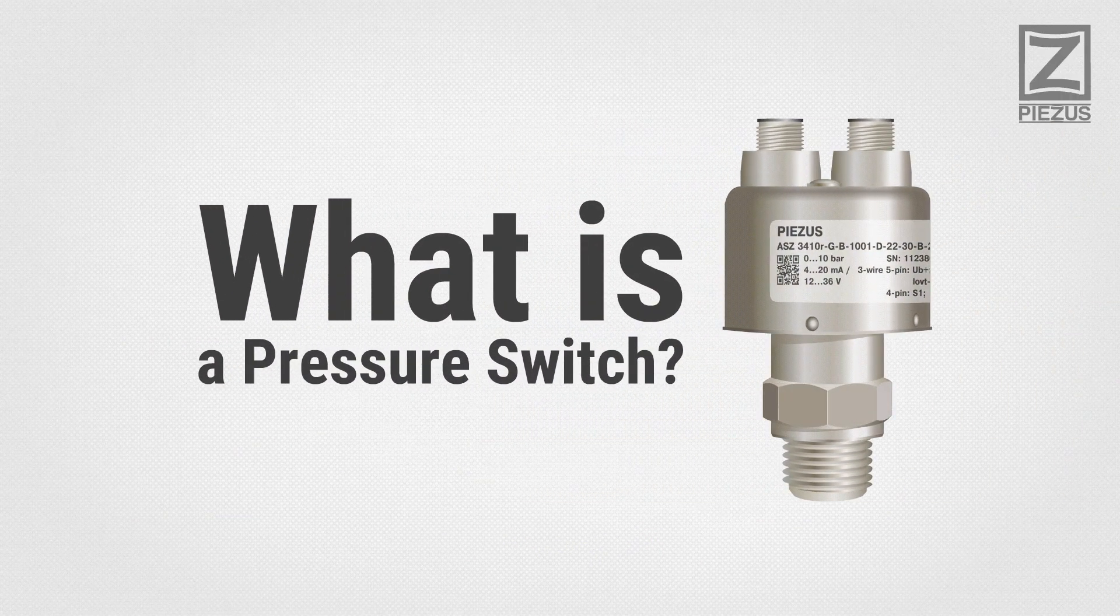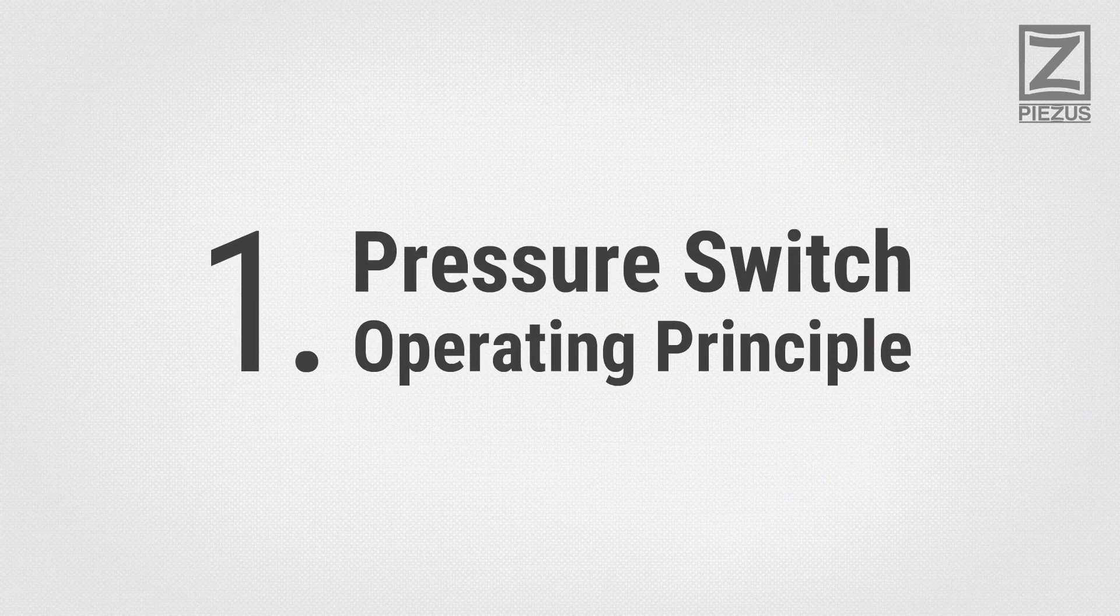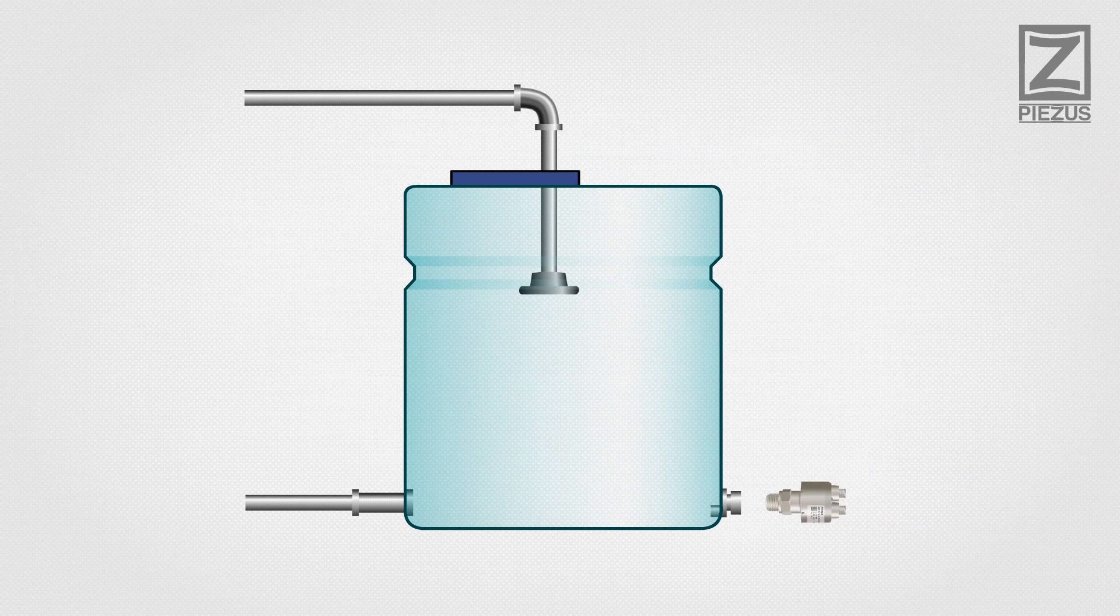What is a pressure switch? Pressure switch operating principle. A pressure switch is used to measure and maintain pressure or level of liquid or gas media.